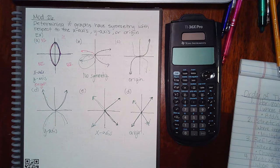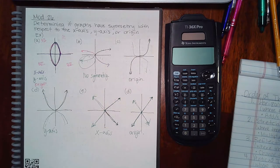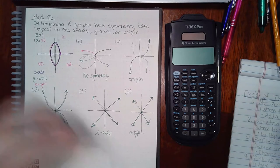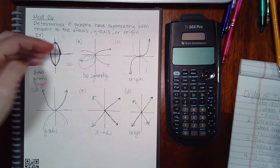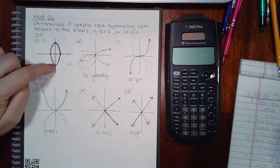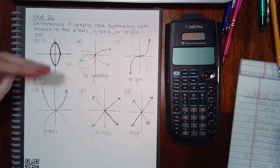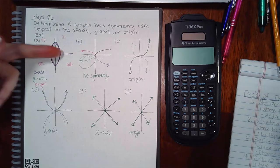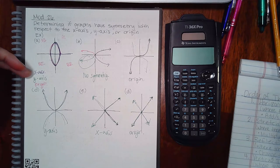The first topic is determining if graphs have symmetry with respect to the x-axis, the y-axis, or the origin. If I flip the graph over the x-axis, I want to know if the graph lands on itself. In this particular case, if I were to flip the top half over the x-axis, it actually lands on the bottom half, and vice versa. So this graph is symmetric with respect to the x-axis.